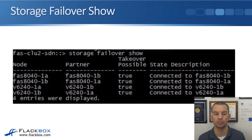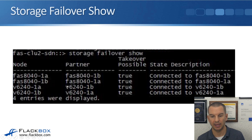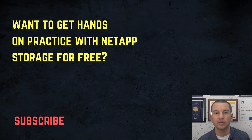The 'storage failover show' command shows you in a four-node cluster that the first two nodes are an HA pair for each other and the second two nodes are an HA pair for each other, with takeover possible shown as true — confirming everything looks good.